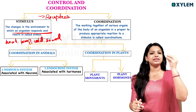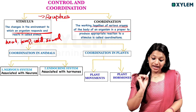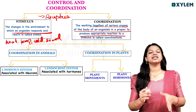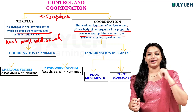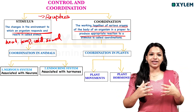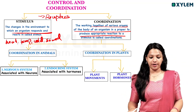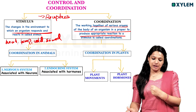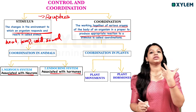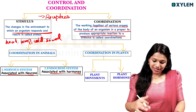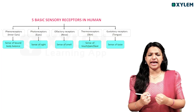Coordination in animals. Working the various organisms of the body of an organism in a proper way to produce appropriate reaction to a stimulus is called coordination. In our body, everything is organized — we have to use coordination. In animals, we have to help our coordination through our endocrine system. The nervous system is associated with the neurons and the endocrine system is associated with hormones. We are conveying sensors which are in our organization.